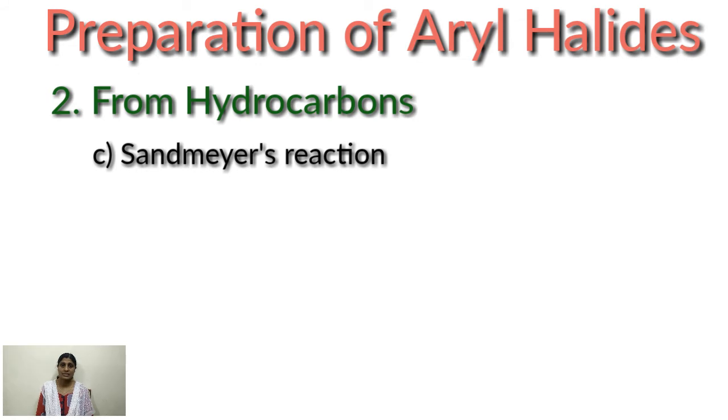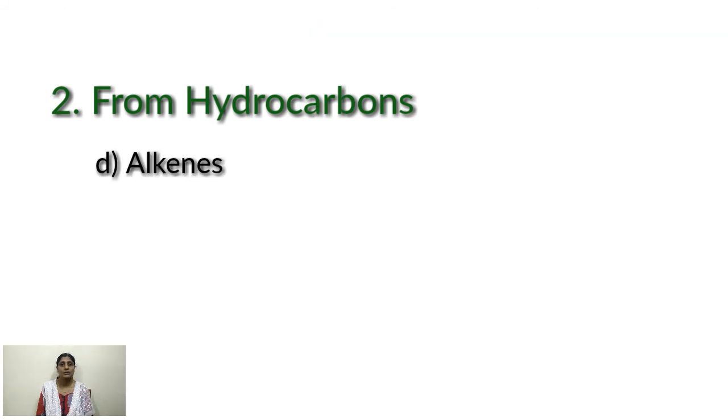And the next one, from alkenes. Addition of hydrogen halides in alkenes. Hydrogen halides used are HCl, HBr, or HI. Alkenes treated with hydrogen halide to form haloalkanes. Here simply addition reaction is taking place. That means an alkene, if it is symmetrical, it is very easy to add. An alkene plus HX, you are getting an addition product, simply adding hydrogen halide there by breaking the double bond.